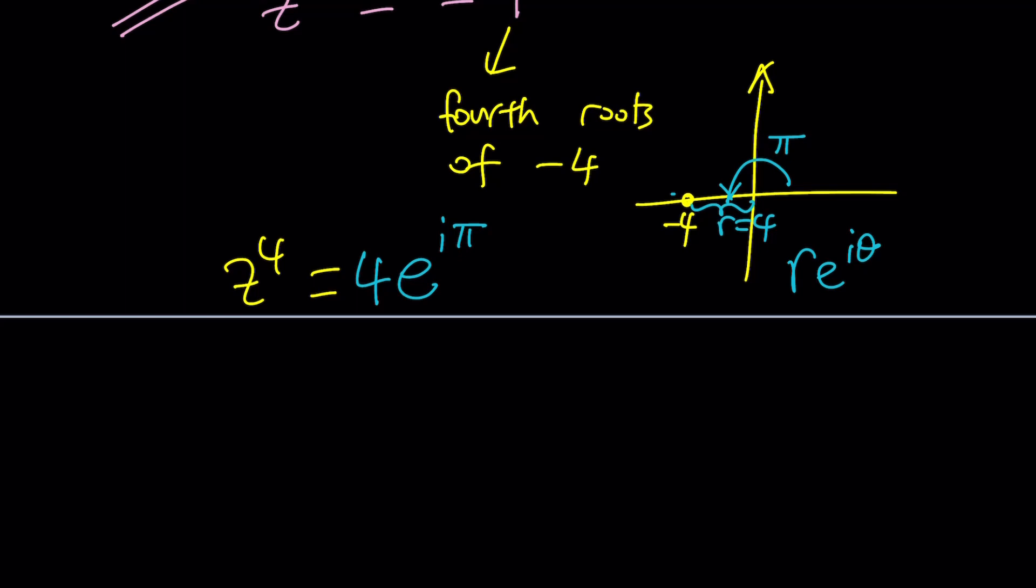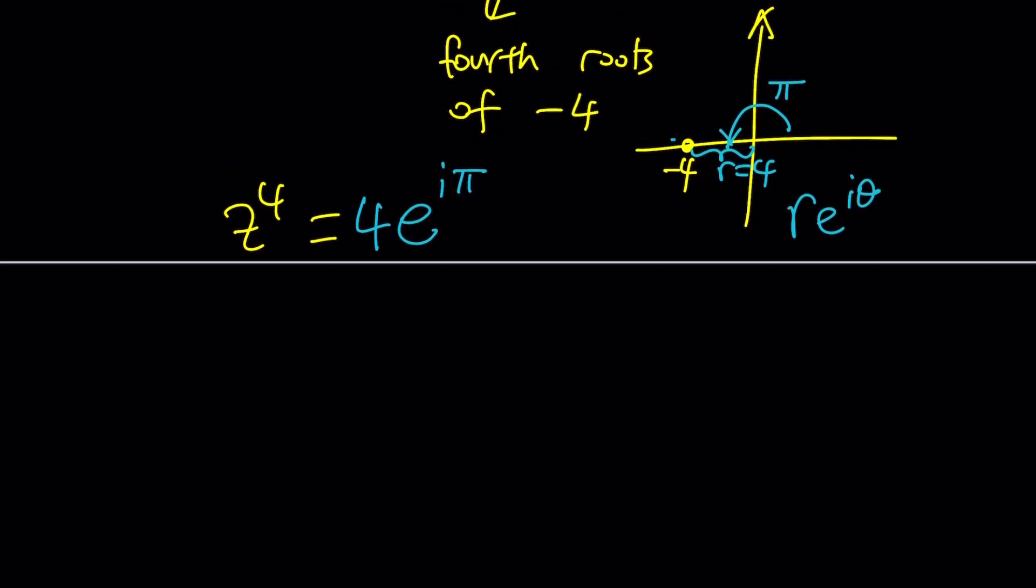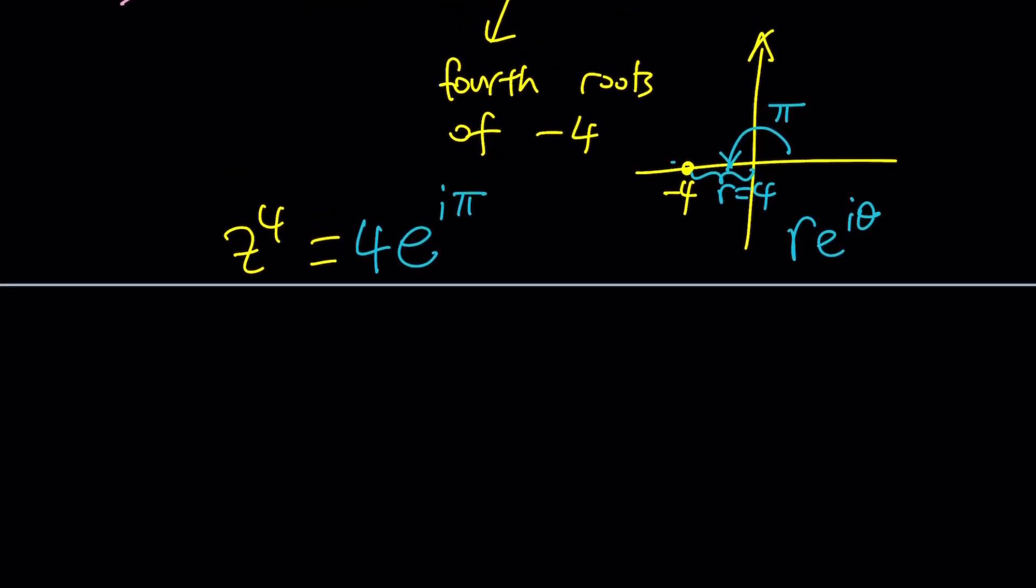But here's a problem with this notation. This is only one of the solutions, but this is multi-valued. Obviously, adding 2 pi to this is going to bring you to the same point, but when you take the fourth root, it's going to become a different angle. Make sense? So there's multiple representations of the same thing since it's multi-valued. So here's what I'm going to do. I'm going to write this as pi plus a multiple of 2 pi, or I'm going to keep adding 2 pi to it and then take the fourth root. Let's go ahead and do this first.